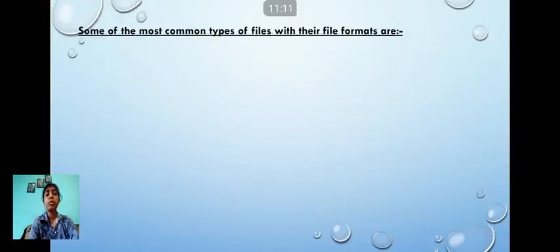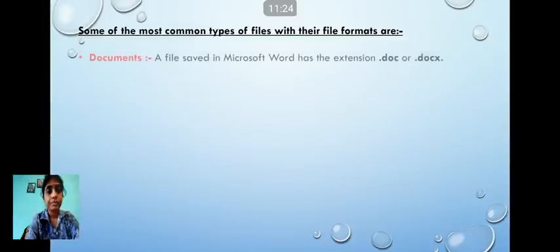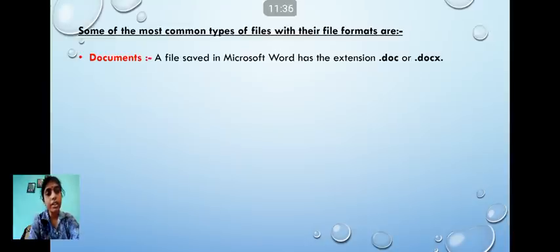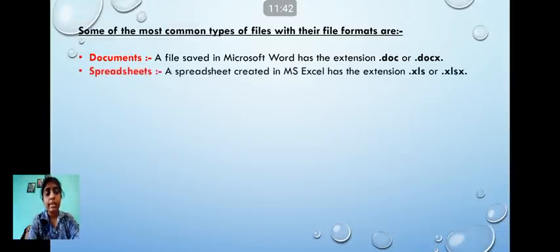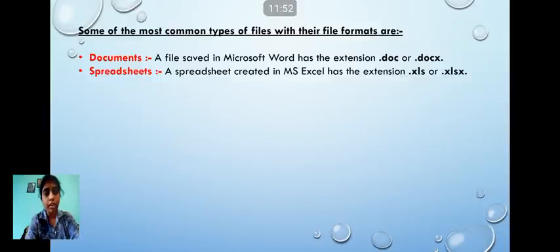Some of the most common file types and their formats are: documents created in MS Word are given the extension .doc or .docx. Spreadsheets created in MS Excel have the extension .xls or .xlsx.